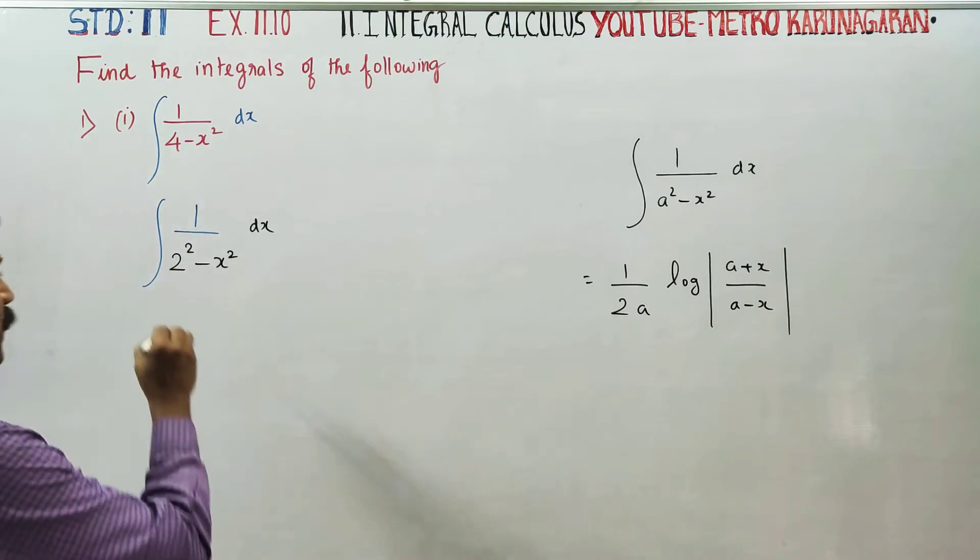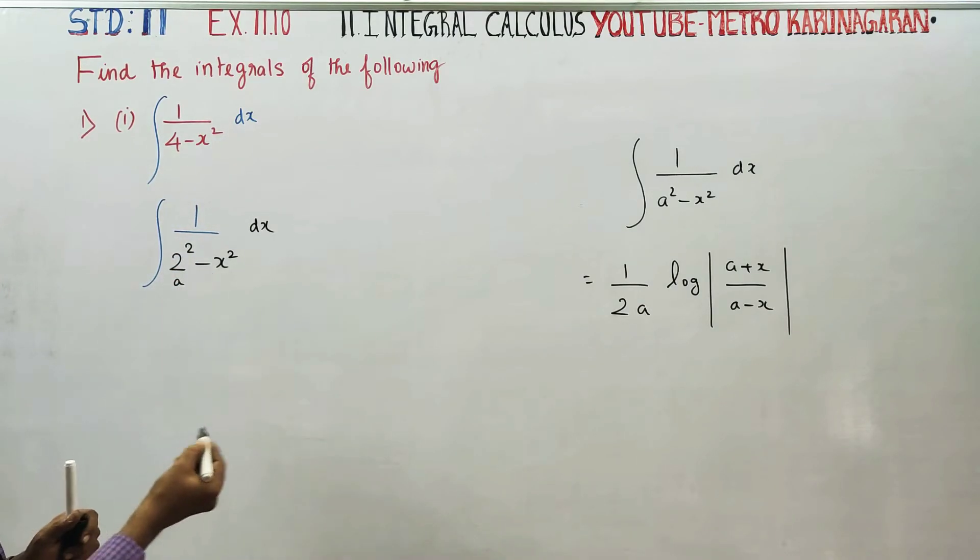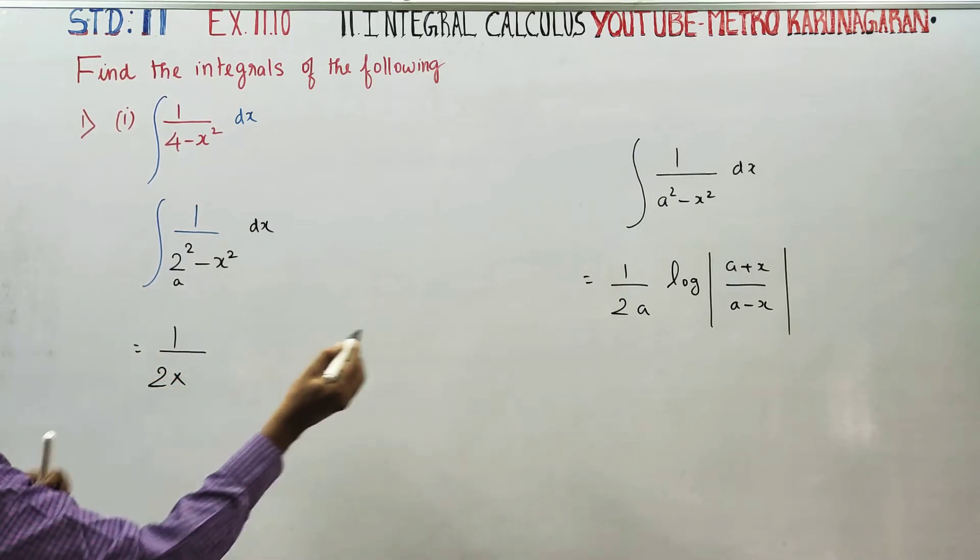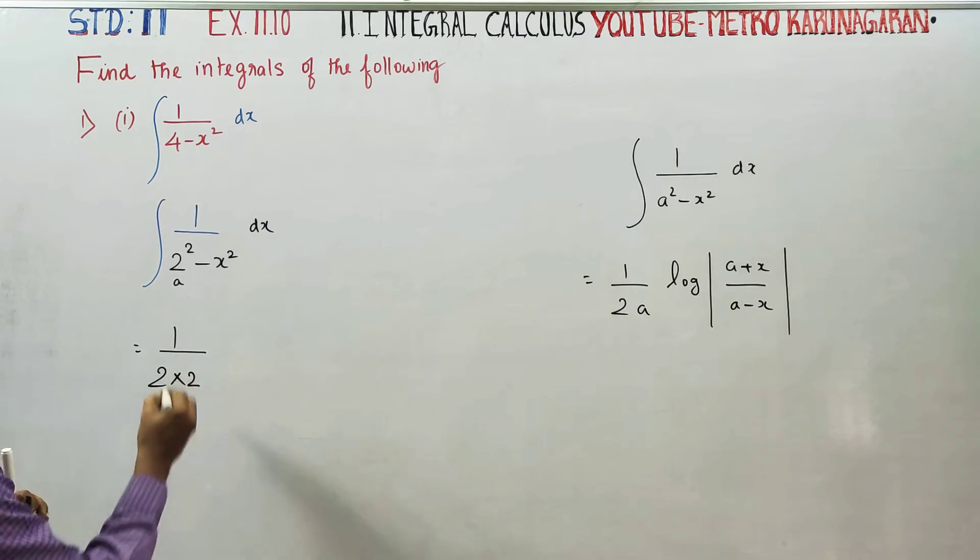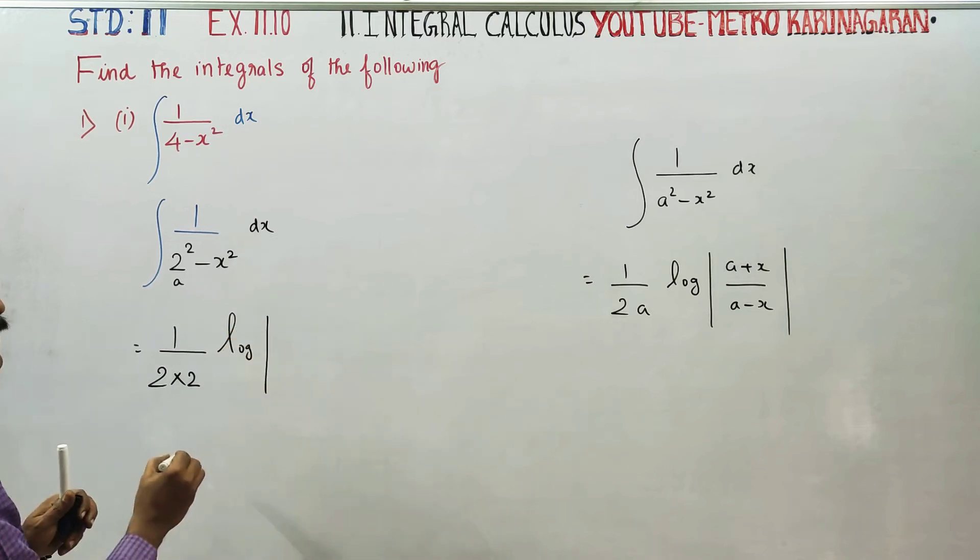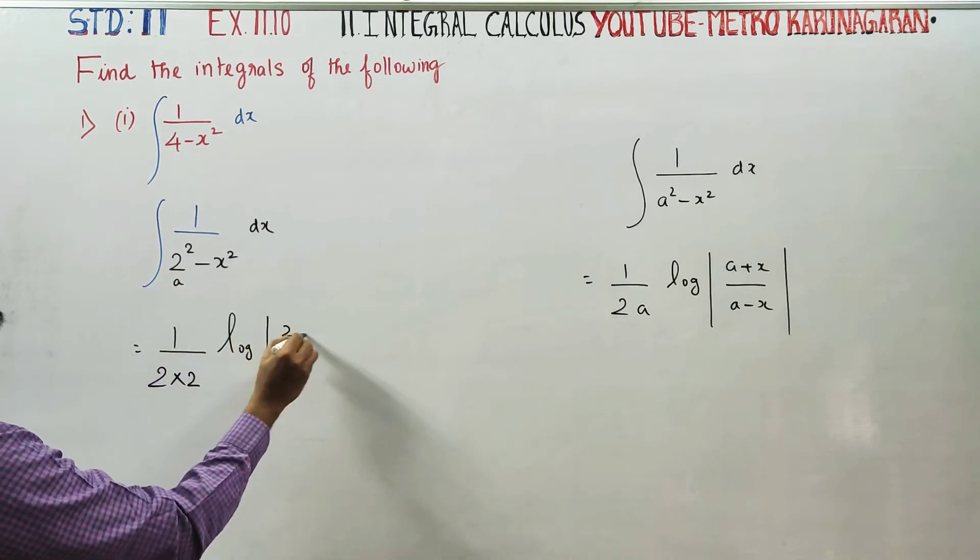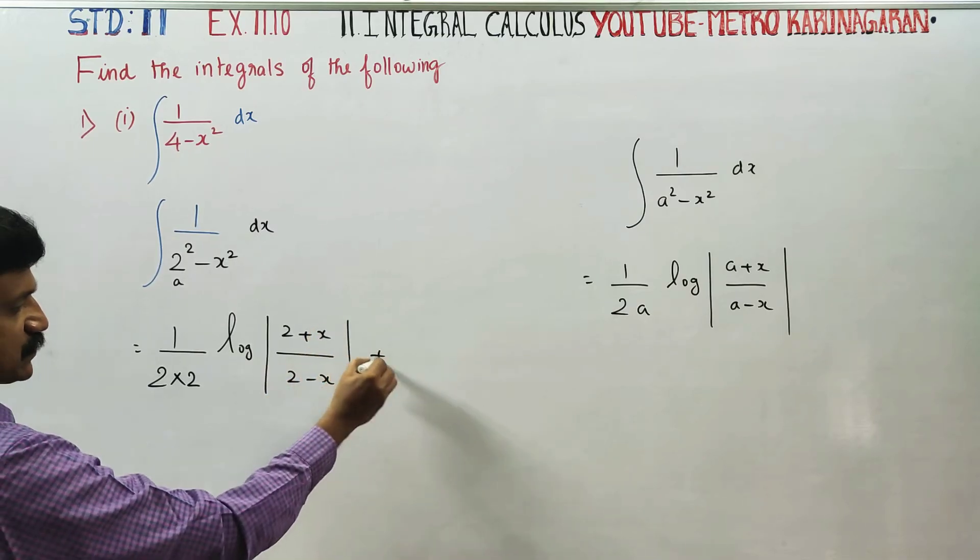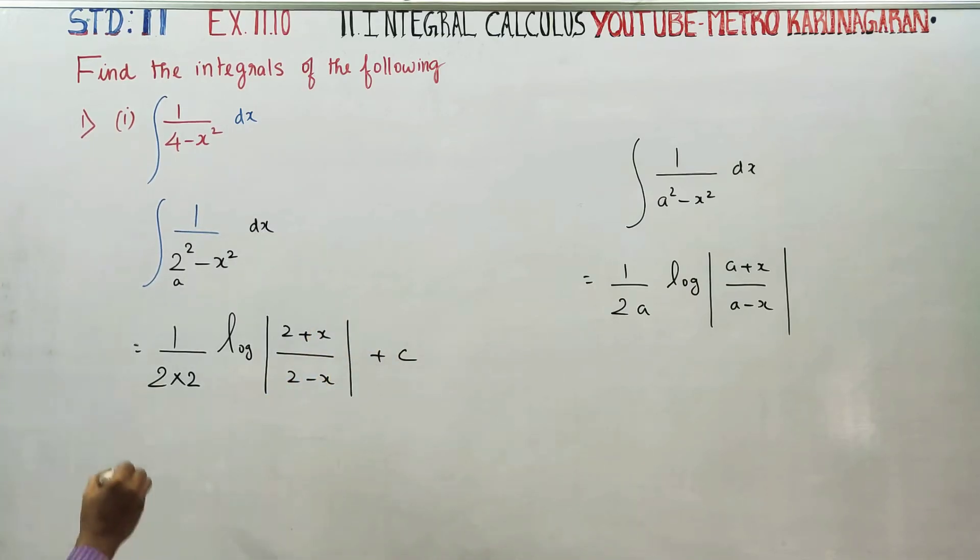In this sum, a is 2, so 1 by 2a equals 1 by 4. The answer is 1 by 4 logarithm of 2 plus x by 2 minus x plus integration constant c.